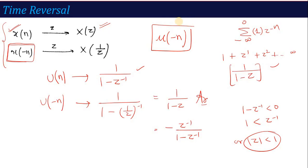The concept of finding ROC is the same — here we are simply using the property to simplify the question, to solve it in terms of limits. If you know the properties, it is much easier compared to the direct method of calculating limits, putting values, applying GP, and getting the answer — because here I'm only using the one basic u(n) transform and applying the property to get the answer of the required signal.